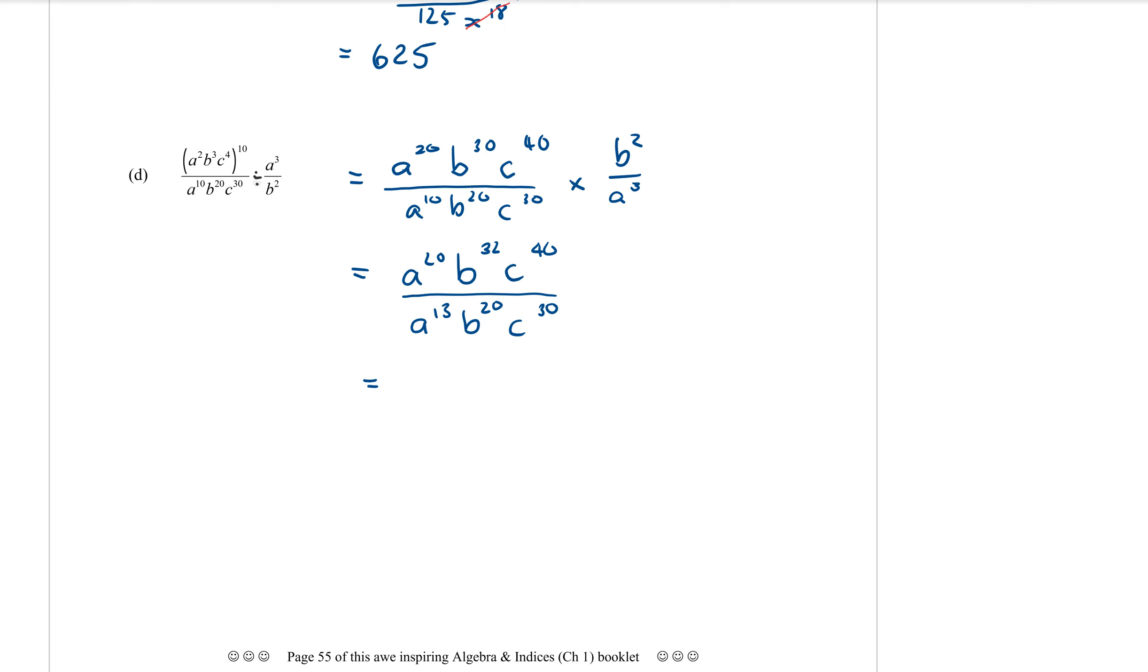So here comes the cancelling part. You want to find for each base, you want to find the one with the smallest power, cancel it off and subtract it from the one that has the higher power. So for example, the A's. We have A to the 20 and A to the 13. 13 is the smaller one. So it's going to cancel completely away.